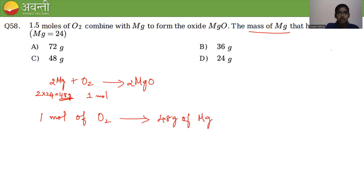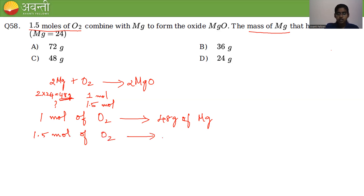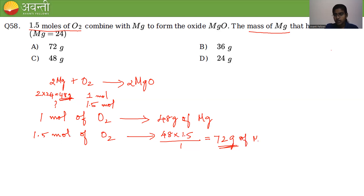They are asking for 1.5 moles of oxygen. So for 1.5 moles of O₂, the mass of Mg = 48 × 1.5/1 = 72 grams. So 72 grams of magnesium would react. Just take the ratio and cross multiply.